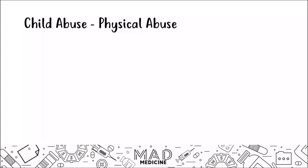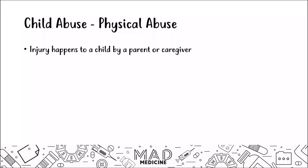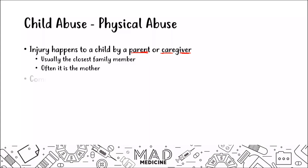In physical abuse, a child has injuries caused by a parent or caregiver. The injury is usually caused by the closest family member, often the mother — someone who is always caring for the child, may be overworked, exhausted, and fatigued, causing their judgment to be cloudy. Physical abuse commonly affects kids under one year old, which is a very important point.